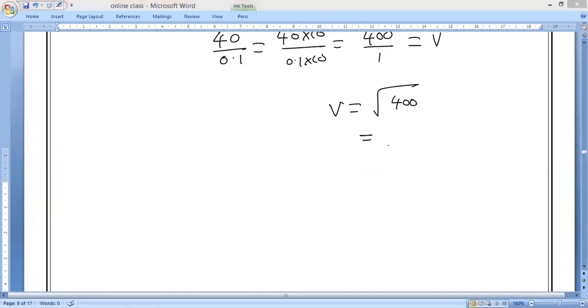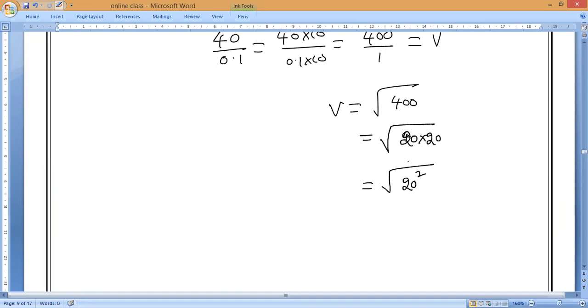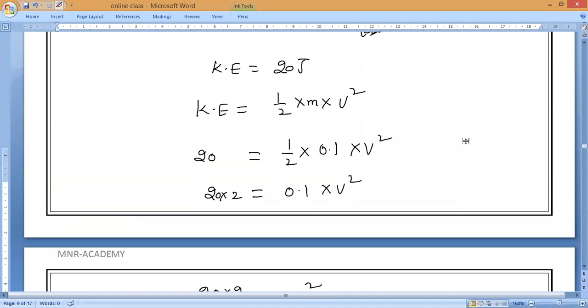20 meter per second. So now, meter per second only - velocity unit. I can write this as 20 into 20, which equals 20 squared. So square and square will get cancelled. Velocity is 20 meter per second. Not meter per second square. Careful. That is acceleration. So velocity equals 20 meter per second. Everybody solve.